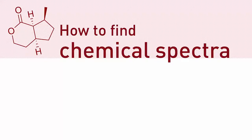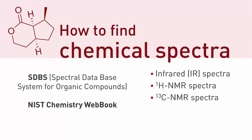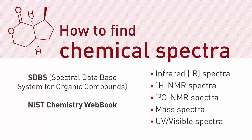There are lots of ways to find chemical spectra online. In this video, I'll show you two databases: the Spectral Database for Organic Compounds, and the NIST Chemistry Webbook. These databases contain IR spectra, NMR spectra, and more.